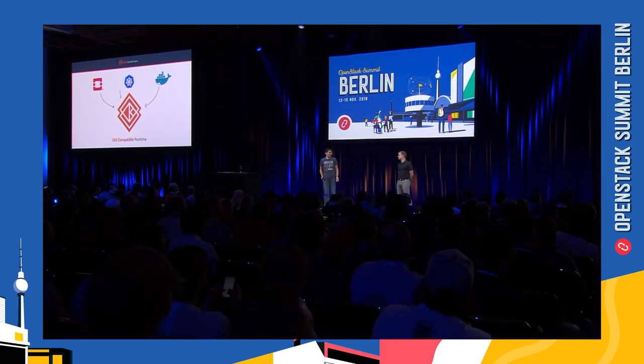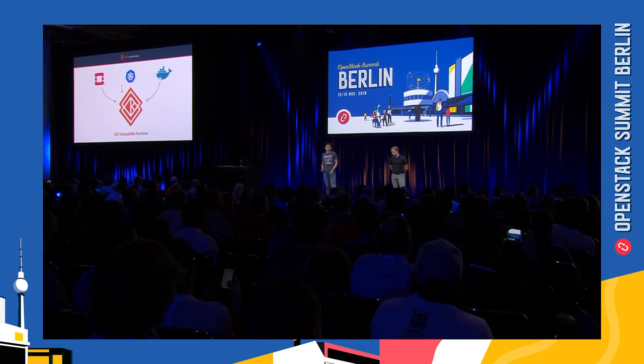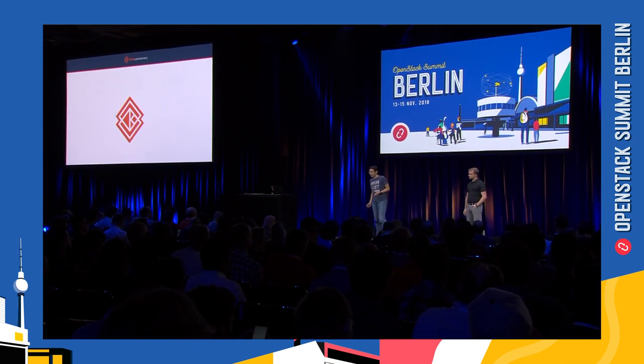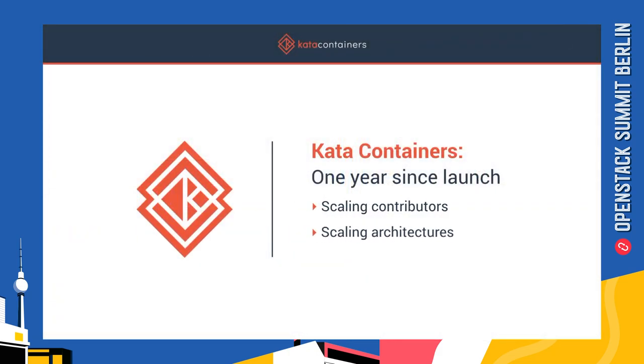Kata containers is OCI compatible — just like runc — and can integrate with almost all container orchestration systems, such as Kubernetes, Docker, and OpenStack Zun. We are a member of the OCI, and over the last year we have welcomed many additions in both contributors, architectures, and features.